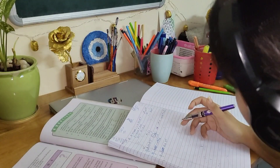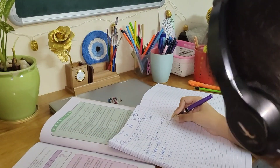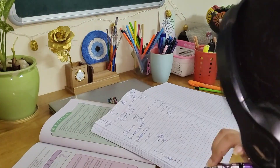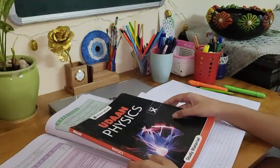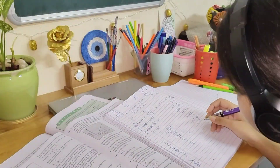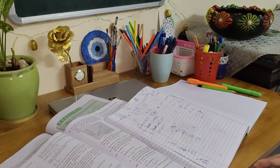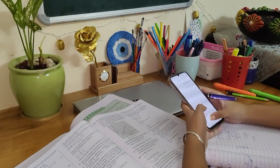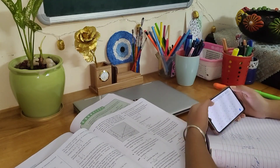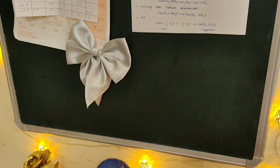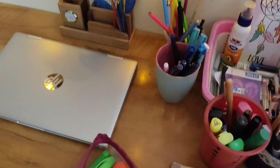I first did the solved examples from the physics index and then moved to the back exercises. In physics, the chapter I'm covering goes up to 'Factors Affecting Resistance' — I'm only doing till that topic for exam purposes. I was also checking answers using the calculator and didn't have the answer key, in case anyone was wondering.